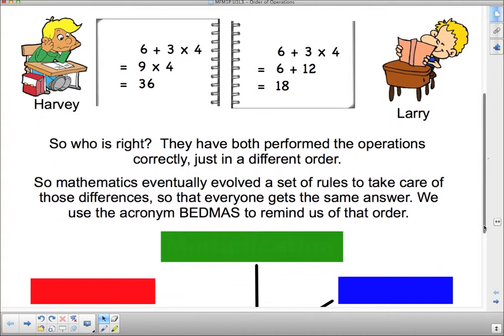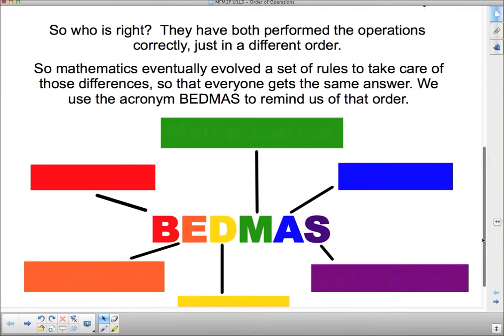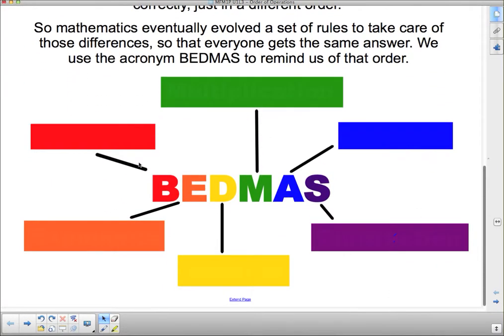So who is right? They have performed the operations correctly, just in a different order. So mathematics eventually evolved a set of rules to take care of the differences, so that everyone gets the same answer. We use the acronym BEDMAS to remind us of that order. So here's what BEDMAS is.